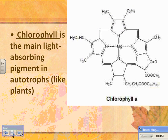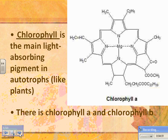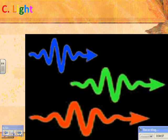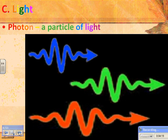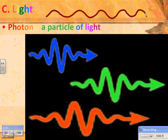Chlorophyll is the main light-absorbing pigment in photo-autotrophs like plants. There's chlorophyll a and chlorophyll b, with chlorophyll a being the more important one. White light is actually made of all the colors of the rainbow. You can think of light as waves or as particles — if you think of it as particles, you have to think of photons. A photon is defined as a particle of light. It takes just a certain amount of light to raise an electron up an energy level, which is why we define photons.